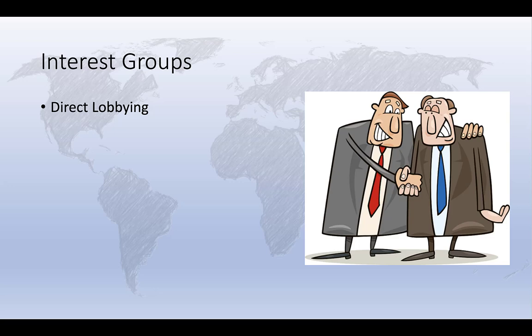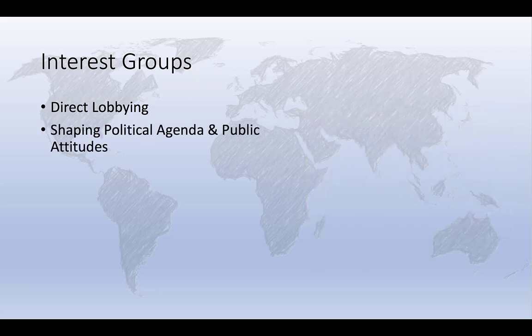Interest groups may also provide campaign donations and support the election of particular candidates in order to help secure access to decision makers once they're elected. The website Open Secrets is a good source to track these kinds of donations, and they track literally billions of dollars in donations annually. Beyond the direct donations and support, interest groups may also attempt to shape the political agenda, public attitudes and behaviors, or the electoral outcomes themselves, most often by creating campaigns around issues of particular importance to them.